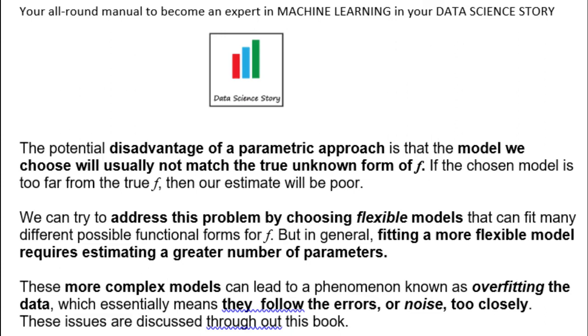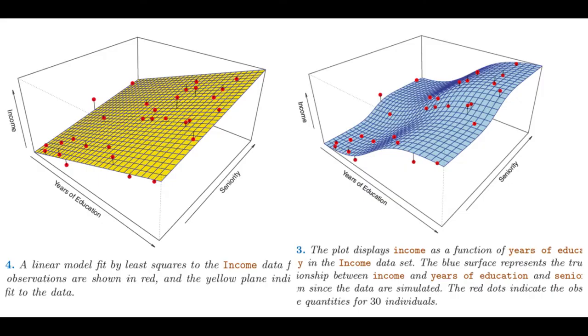To address this problem we can choose a more flexible model that can fit many different possible functional forms for the relationship f. But in general, fitting a more flexible model requires estimating a greater number of parameters. These more complex models can lead to a phenomenon known as overfitting the data, which essentially means they follow the errors very closely.